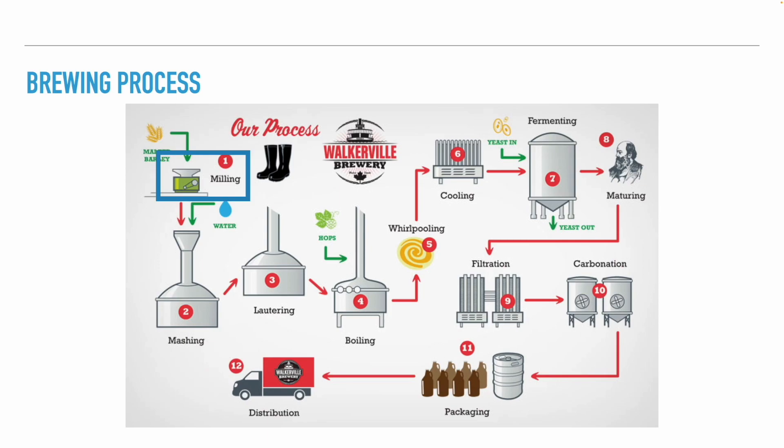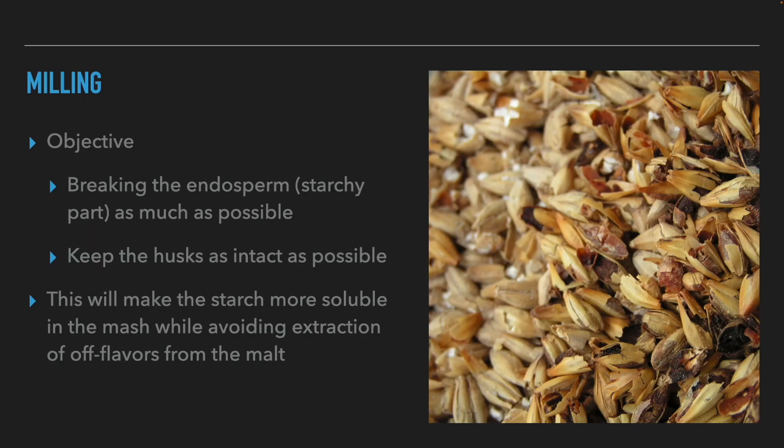The first step we will talk about is the milling of the malt. The objective of milling is to break the endosperm, which is the starchy white part of the malt, into smaller pieces while keeping the husks as intact as possible. This will make the starch more soluble in the mash while avoiding the extraction of off-flavors, mainly tannins, from the malt into the beer.